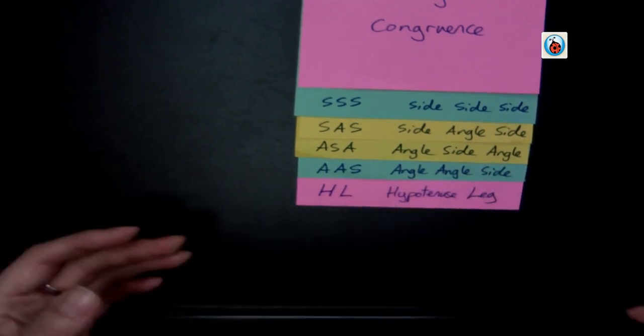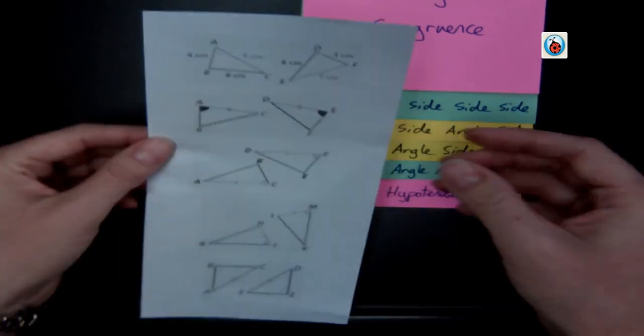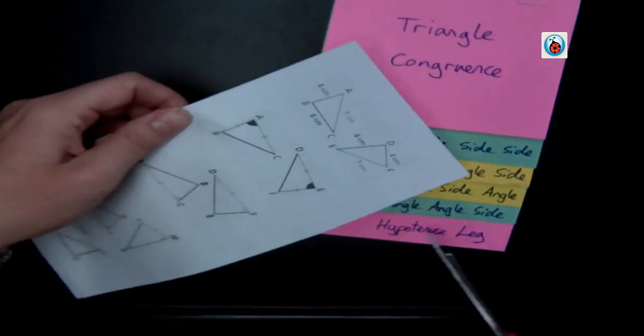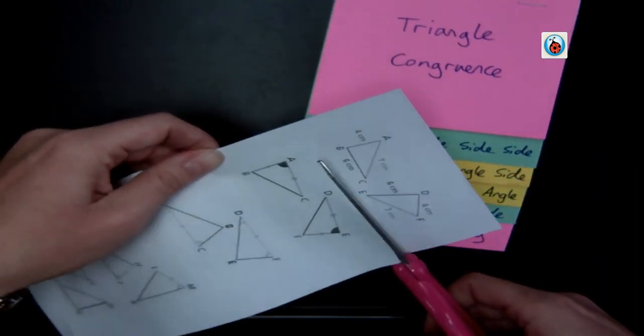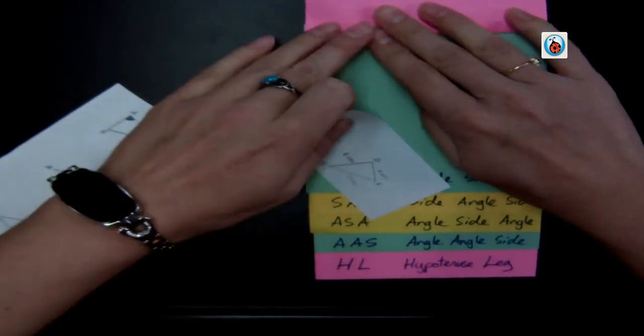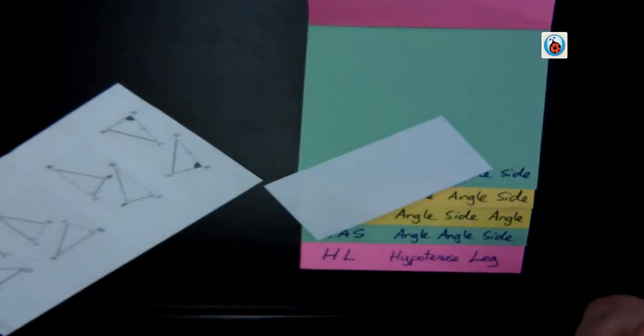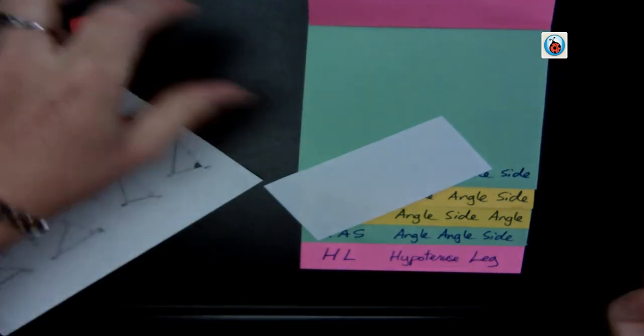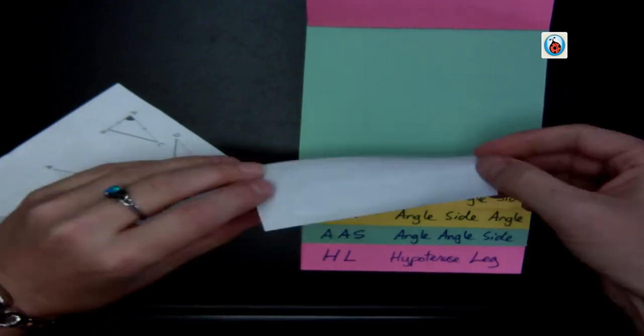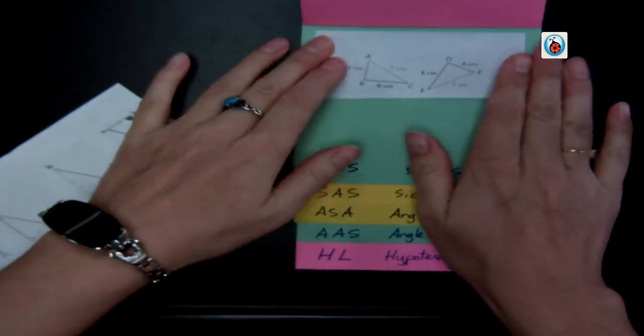These are all the shortcuts we can use to prove triangles congruent, and these are all what they all look like visually. So next I'm going to cut these off in order and paste them onto each piece of the triangle. So I glue down my first one, which is that side, side, side.